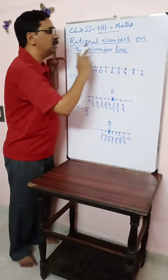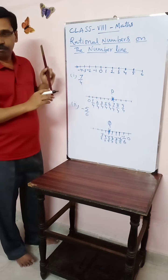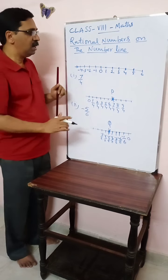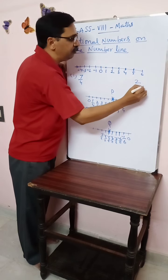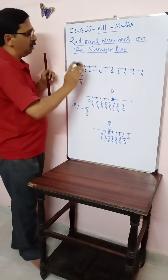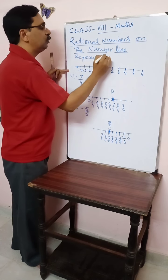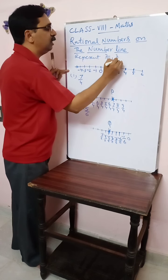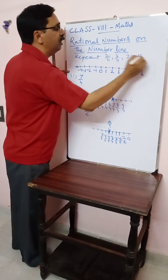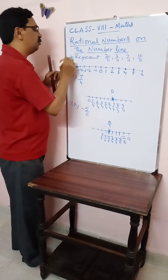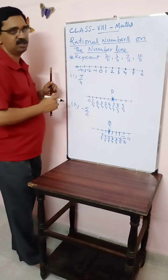This way we can represent rational numbers on the number line. Now follow the same process and represent the following on the number line. The question is: represent two by eleven, three by eleven, seven by eleven, and ten by eleven on the number line. This is the assignment for you for now, and we see the rest in the next class.